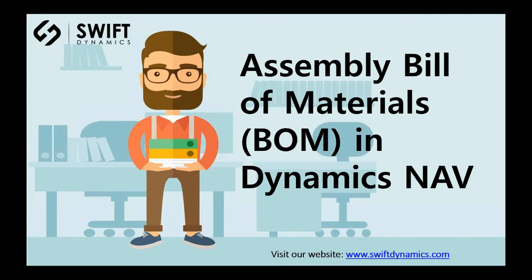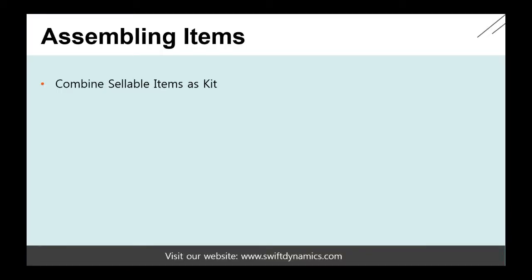One of the questions that's often asked is what is the main difference between assembly management and manufacturing? There are many differences, but one of the main ones is that in manufacturing, you will define what you will make and how you will make it, while in assembly management, it's only about defining what we will make. Combining sellable items as a kit in most cases has a simple production or assembly process, which means there's no need to define the assembly process in the system, so the focus is really on what you will make.